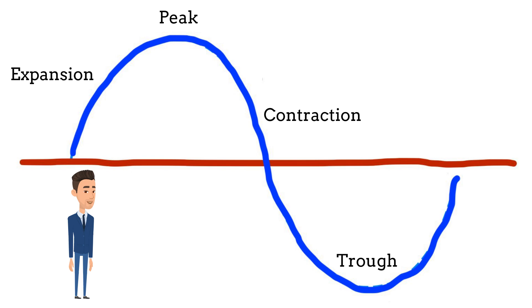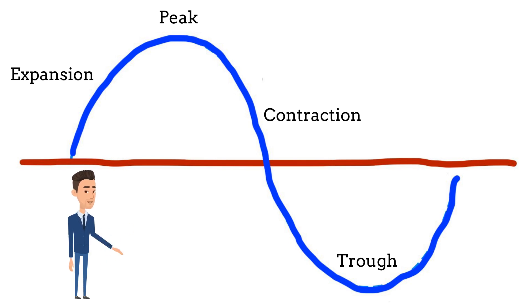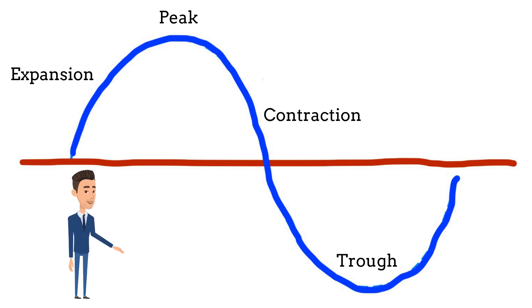Now I am going to show you the different phases of the business cycle. The business cycle is typically divided into four phases. Expansion — this is the phase where economic activity is increasing, and there is growth in output, employment, and income. In this phase, businesses are experiencing high demand, and consumer confidence is usually strong.